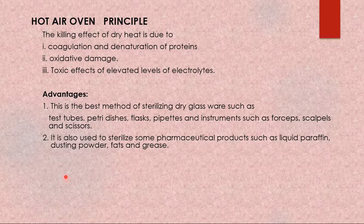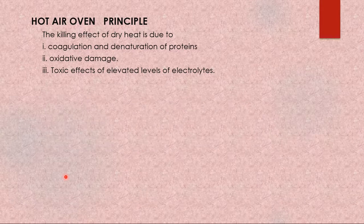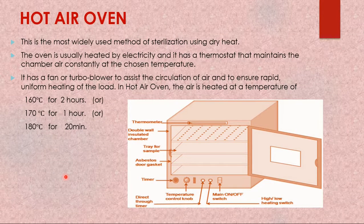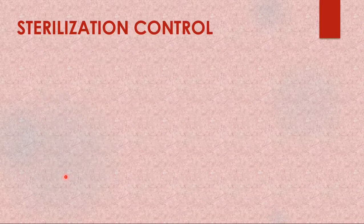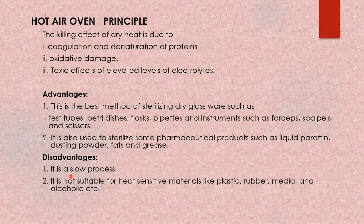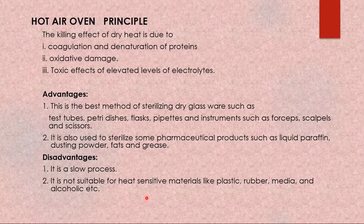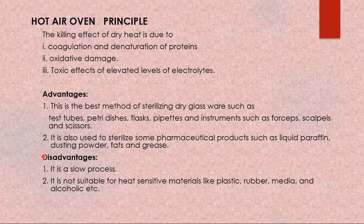The main disadvantage of the hot air oven is that it is a very slow process — it takes hours. It is also not suitable for heat-sensitive materials like plastic, rubber, culture media, and alcoholic substances. So glassware and metal instruments are ideal, but plastics, rubber, and media cannot be sterilized this way.